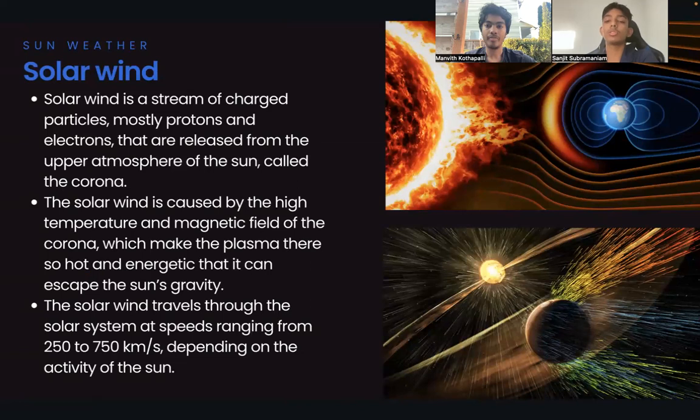The solar wind travels through the solar system at speeds ranging from 250 to 750 kilometers per hour, faster than Hennessey Venom GT, and it depends on the activity of the sun. The solar wind carries with it the interplanetary magnetic field, which is part of the sun's magnetic field that extends into space. Now, Manu will be talking about the characteristics of the sun.